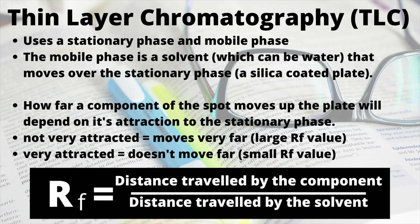Thin layer chromatography can also be used to monitor the progress of a chemical reaction. As the reaction takes place, you take small samples from the mixture and run them as a spot at the baseline on a TLC plate. On either side of this spot, you also run spots for the known reactants and products. You can then compare the components of your mixture with the known reactants and products and estimate the proportions of each, allowing you to estimate the progress of the reaction.